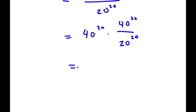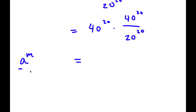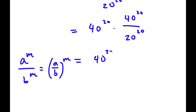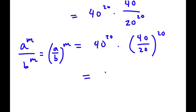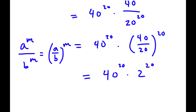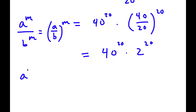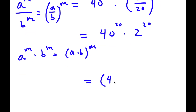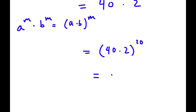Now I can rewrite this as 40 to the power of 20 times 40 to the power of 20 over 20 to the power of 20. Since a to the power of m over b to the power of m equals a over b to the power of m, this becomes 40 to the power of 20 times 40 over 20 to the power of 20. Since 40 divided by 20 is 2, I have 40 to the power of 20 times 2 to the power of 20. Using a to the power of m times b to the power of m equals a times b to the power of m, this equals 80 to the power of 20. So this is my answer.